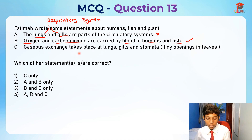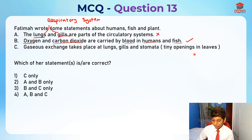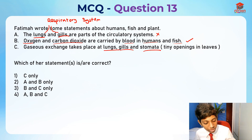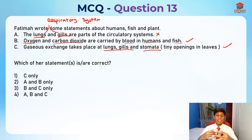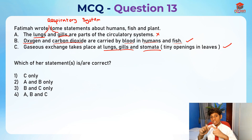Statement three: gaseous exchange takes place at the lungs, gills and stomata. The stomata are tiny openings in the leaf. This statement is also true. Gaseous exchange means when we take in oxygen and give up carbon dioxide — this happens at the lungs, gills and stomata. Take note of this because it is commonly tested.